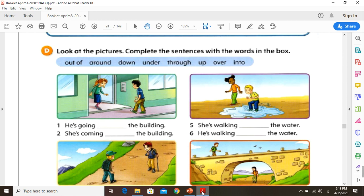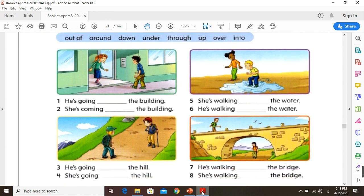Great. Number three. Number three, he is going up the hill. Can you see? He's going up, climbing. Now number four, she is going down the hill. Five, she is walking around the water.